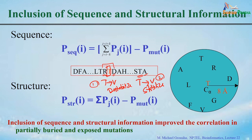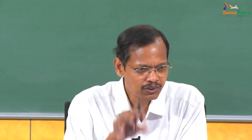To account for this in terms of properties, you can take any window length — for example 3 or 5. Use the formula: sigma from j = i minus k to j = i plus k, where i is the central residue and k is the window length on either side. You can take any window length, get the property values, subtract the mutation values, and include sequence information to get p_sequence(i), which is influenced by the property values plus the neighboring residue information.